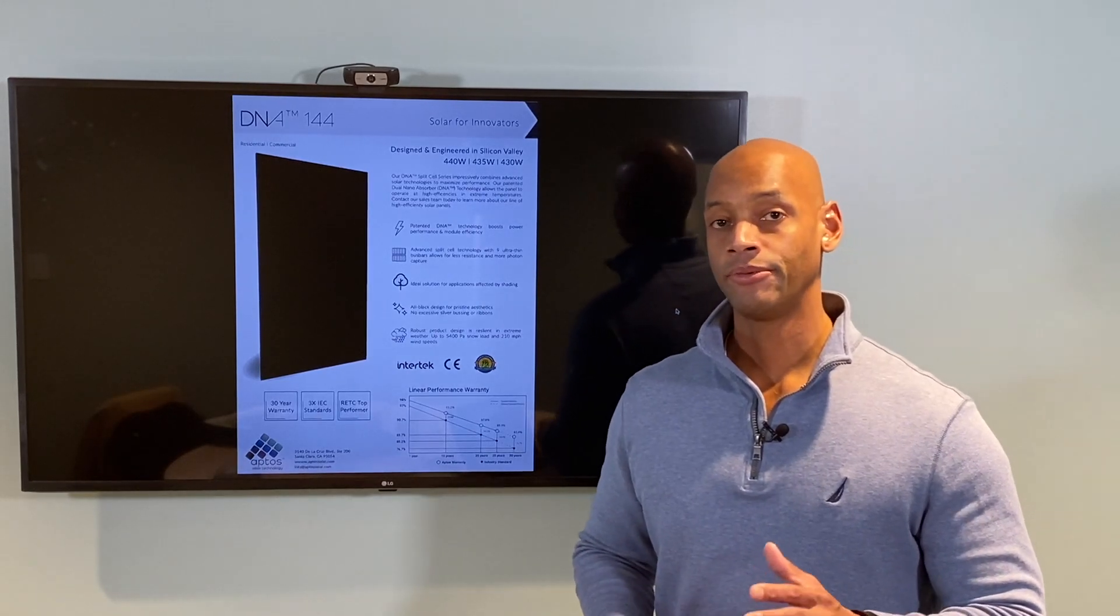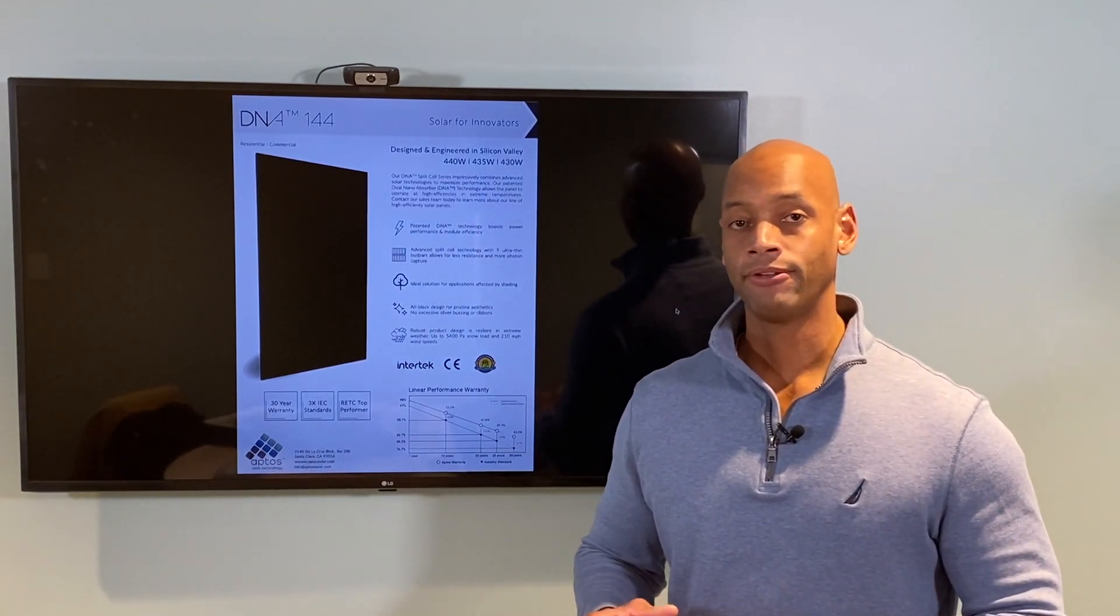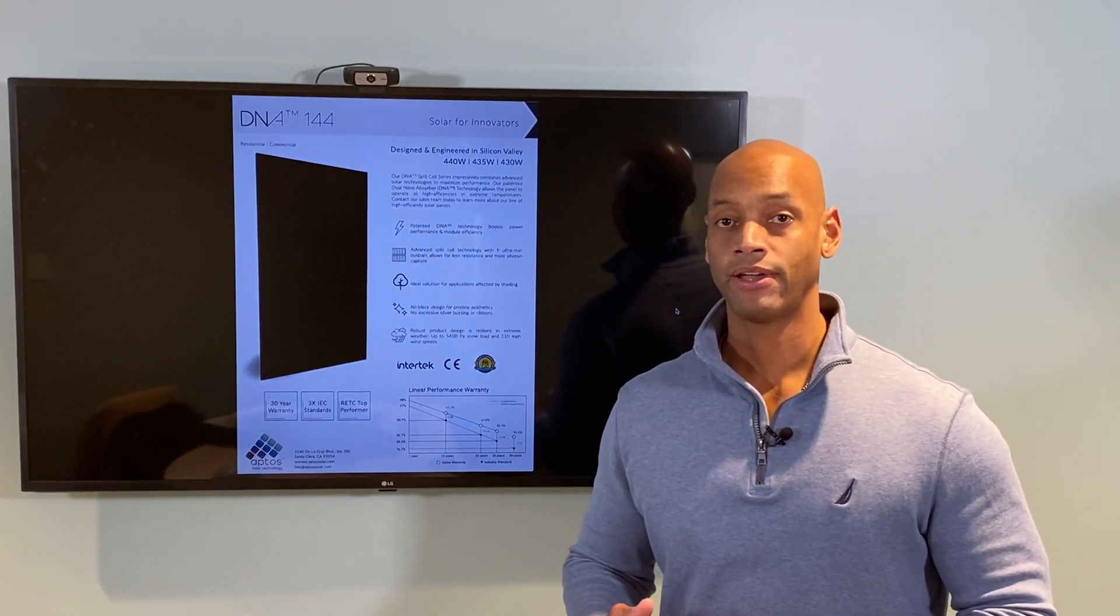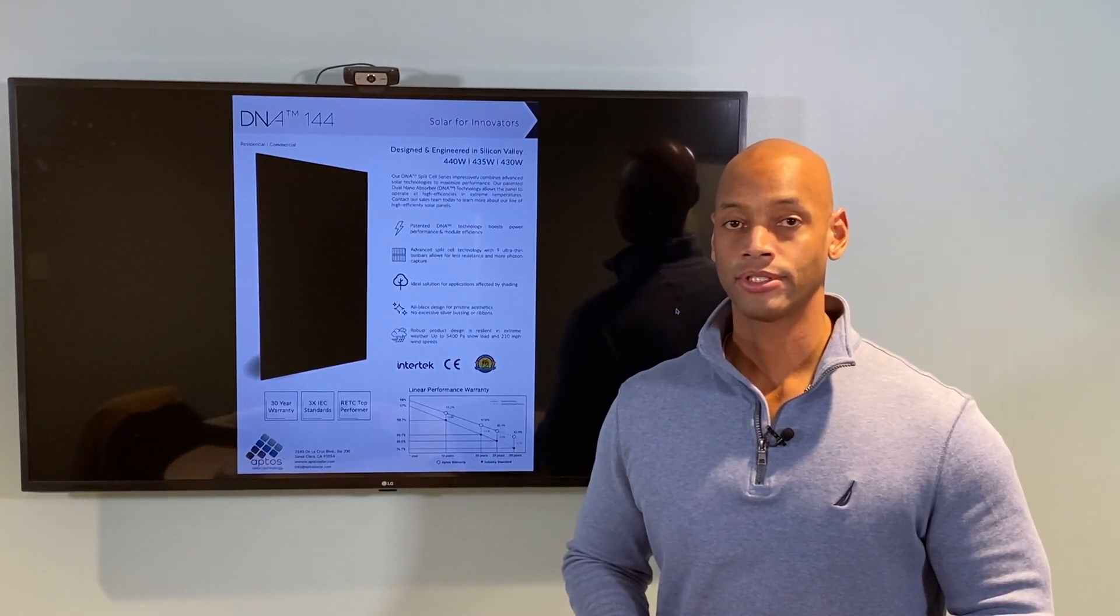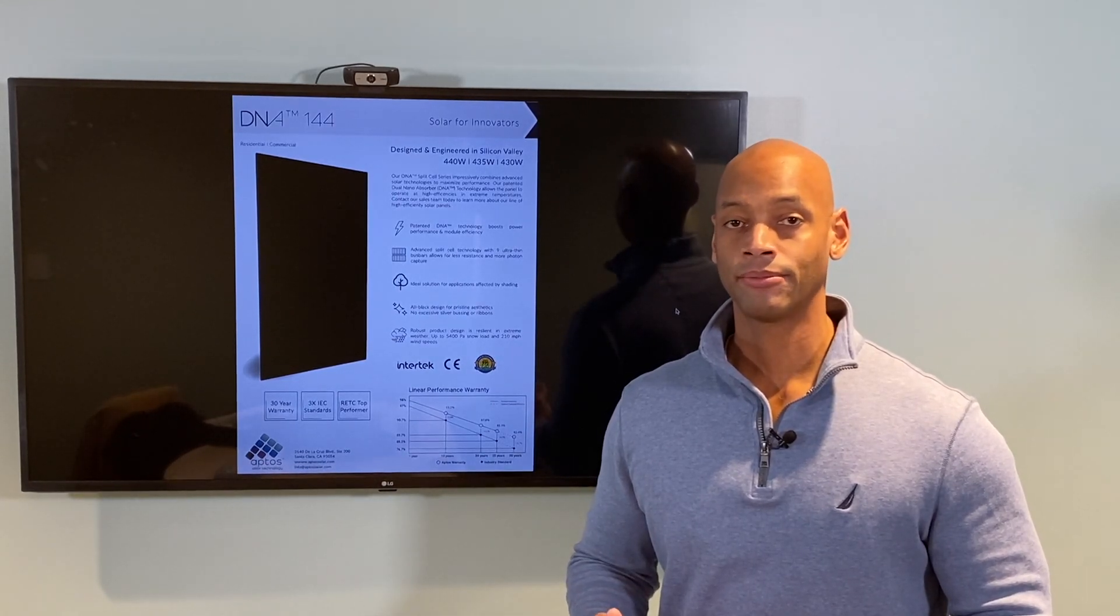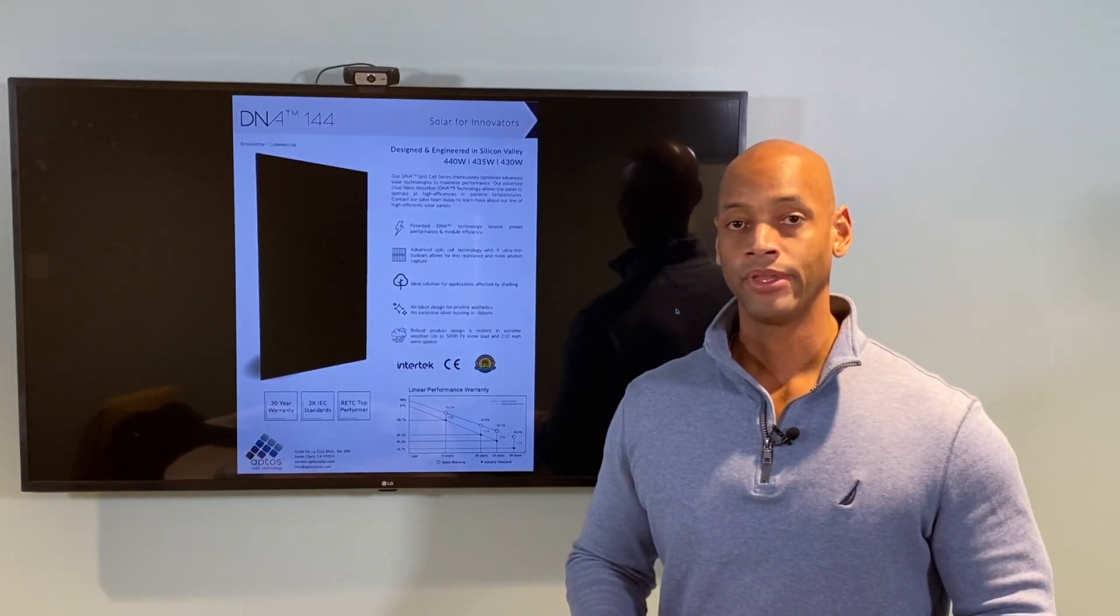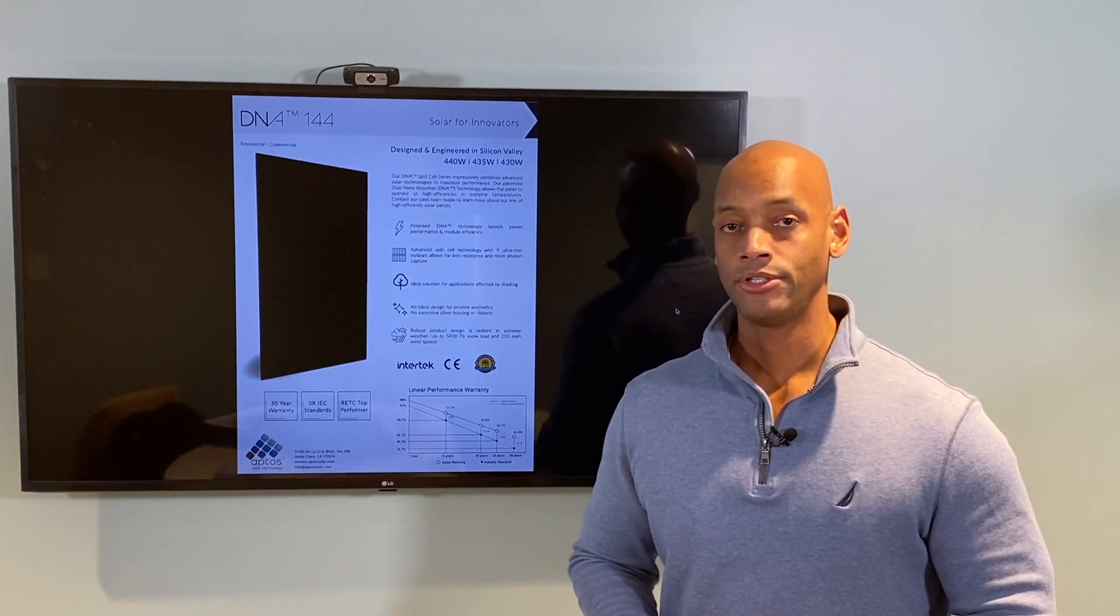For those of you who have been following this for a while, you'll probably recall that Enphase and SolarEdge are the top two leading brands for inverter manufacturers for residential solar systems. The reason they first became so popular is because the optimizer system or the Enphase microinverter system provided a solution to shade mitigation.